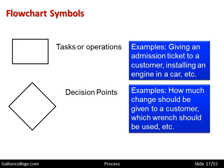A decision point is like a square tipped onto one of its corners. A decision point could be how much change should a customer be given. When a customer makes a purchase, they need some change — how much should be given. Or a mechanic might need to know which wrench or spanner to use in certain circumstances. A decision has to be made — decision points occur throughout our discussion of processes.